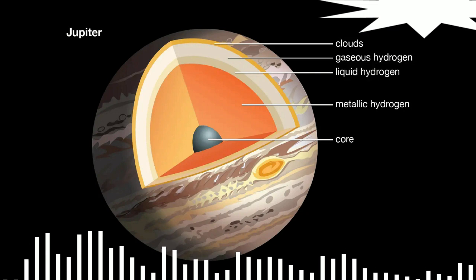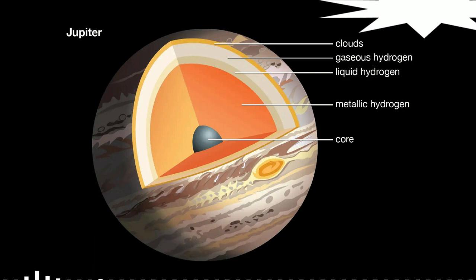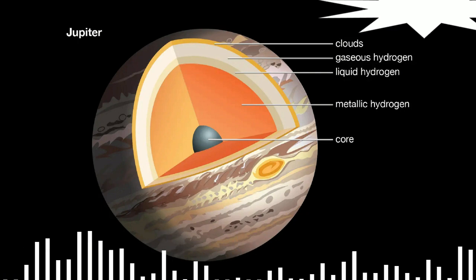However, there's a possibility that metastable metallic hydrogen exists in nature. According to experts, it retains its properties even without pressure.